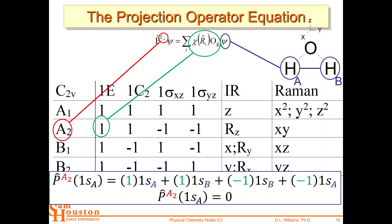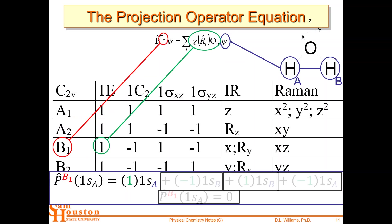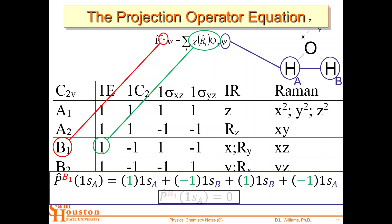This is what the projection operator does for you — you don't have to guess symmetries or try to figure out the pictures. You hammer through all combinations and know which survive and which don't. You'll do much more of this in graduate school in spectroscopy. Let's look at the B1 row: E stays put on 1sA, then −1 × 1sB from C2 rotation. From the σ(XZ) reflection, 1sA goes to 1sB with +1. From σ(YZ), it stays put with −1. Again, plus and minus terms cancel — no B1 combination survives.